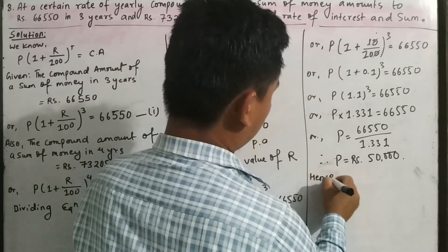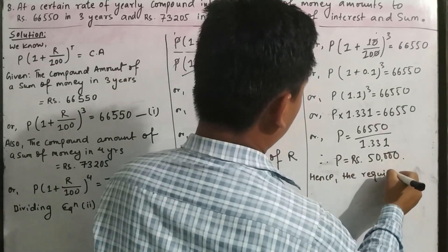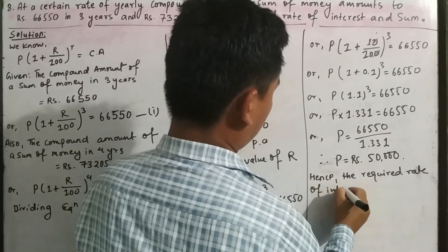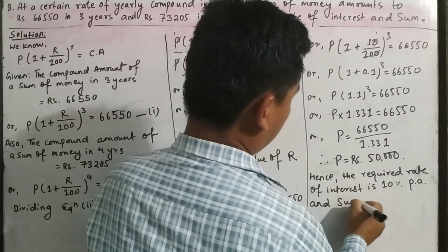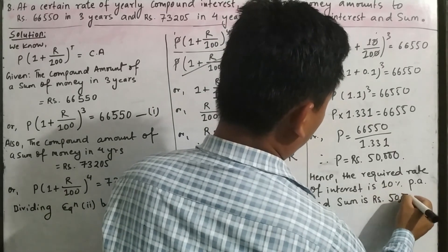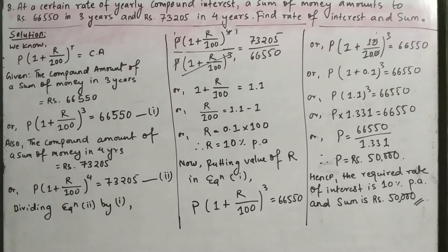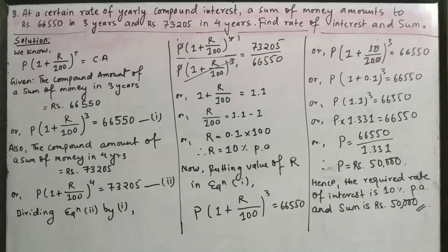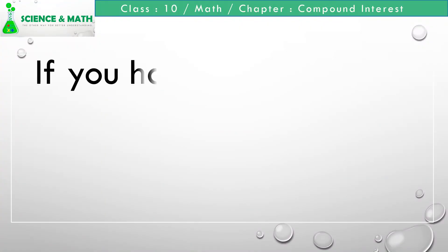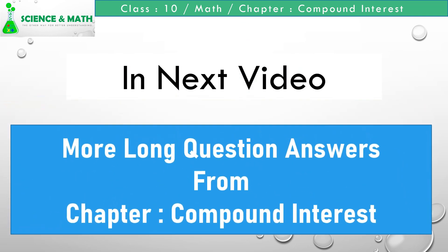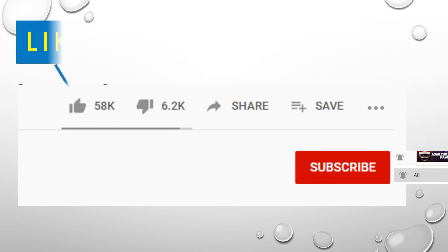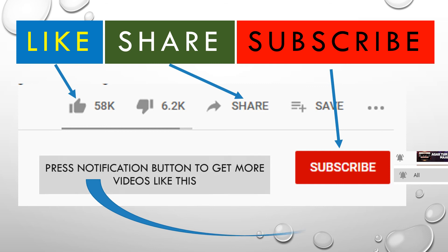Hence, the required rate of interest is 10% per annum and the sum is rupees 50,000. If you have any confusion or questions from today's discussion, you can comment below. In our next video, we will discuss more long question answers from chapter compound interest. To get more videos like this, please like, share, subscribe and press the notification button.